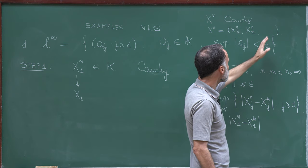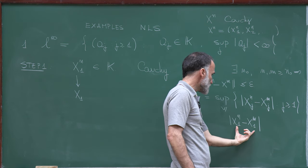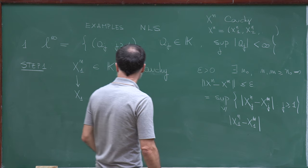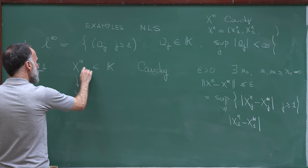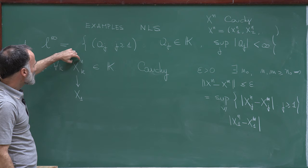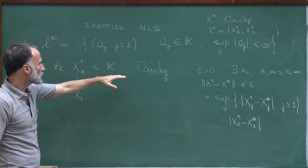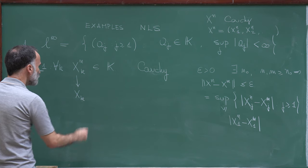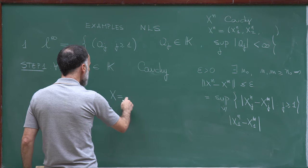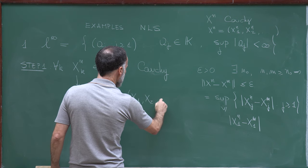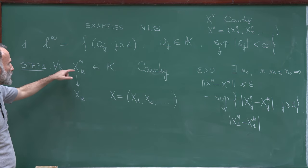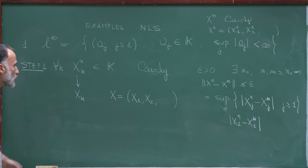Here is my candidate: x is the sequence x₁, x₂, and so on, where each coordinate is the limit of the coordinates of the sequence xn. This completes step one — I now have a candidate.